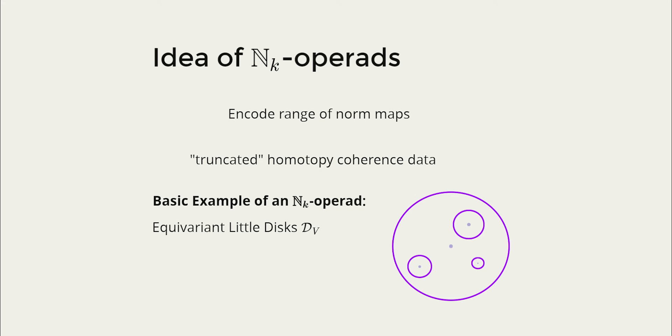A basic example of an N_infinity operad is an equivariant little disks operad. This is a fairly straightforward generalization of the usual little disks operad. Here instead we have a little disk D of an orthogonal G representation V. Little disks operad is then just you take an n-disjoint union of little disks and you embed it into one little disk. The action is just given by conjugation.